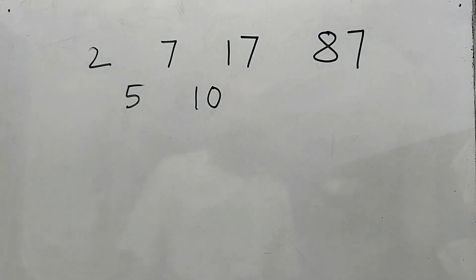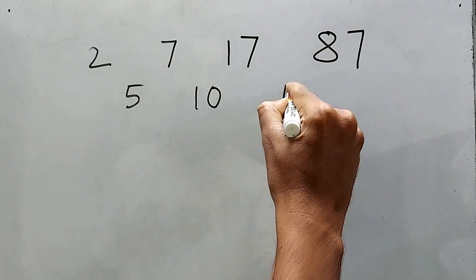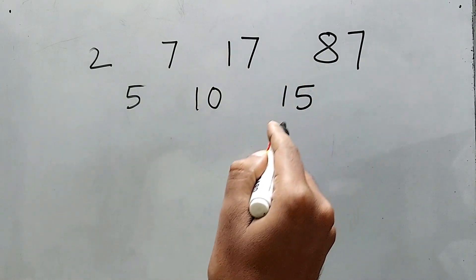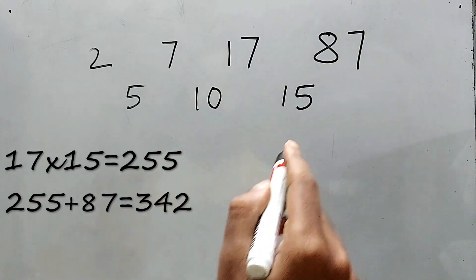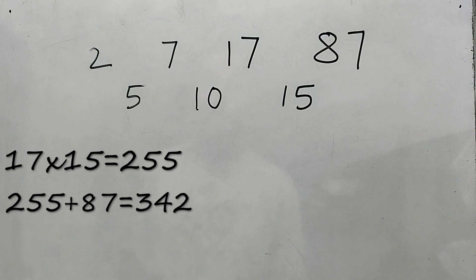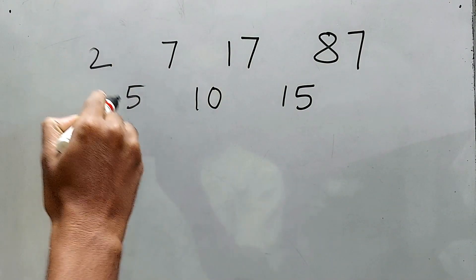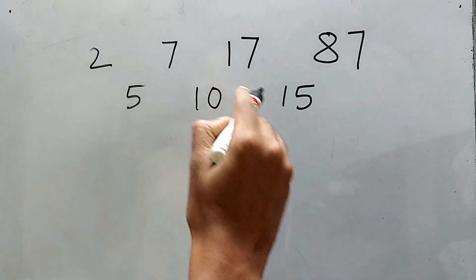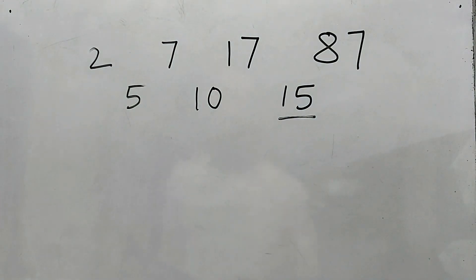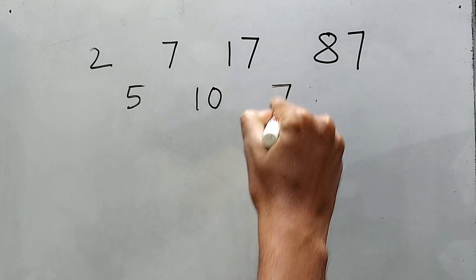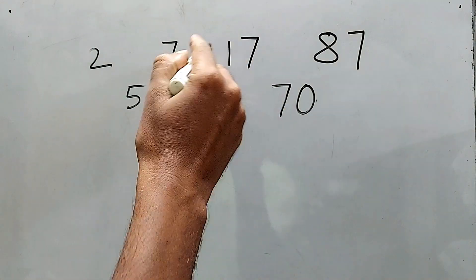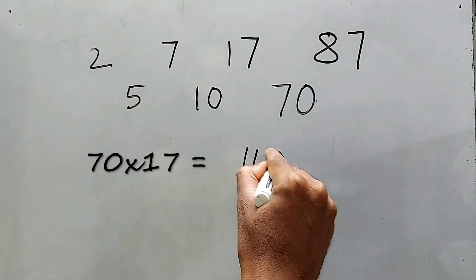So definitely the next number will be 15. So definitely 15 times 17 is 255, and 255 plus 87 is 342. But the problem is: 7 minus 2 is 5, 17 minus 7 is 10, and 87 minus 17 is not 15.